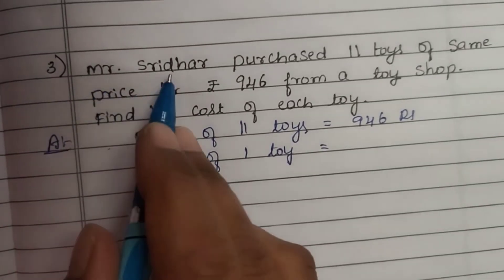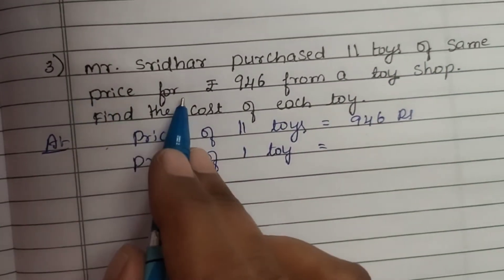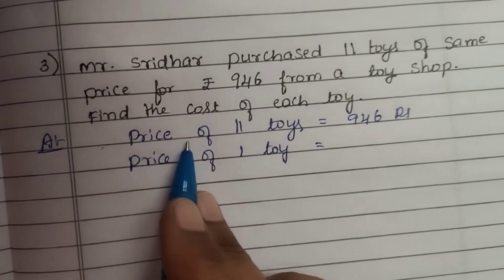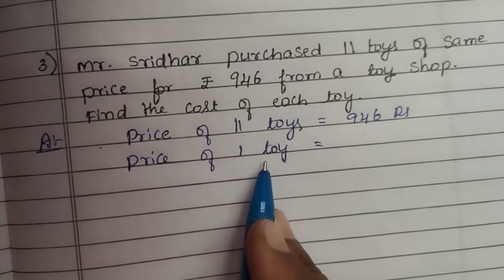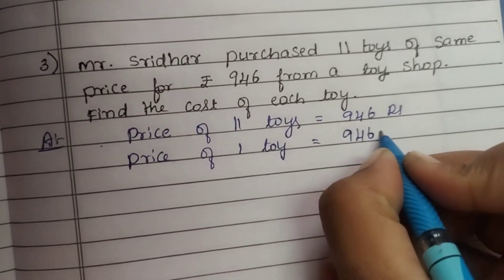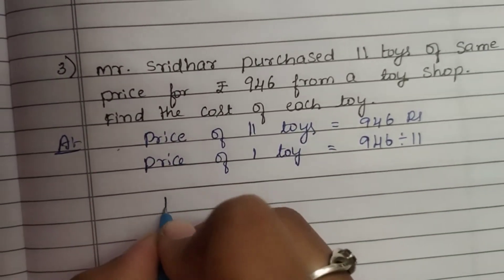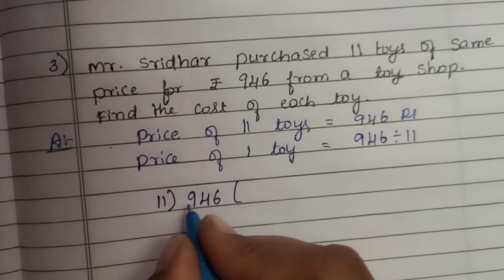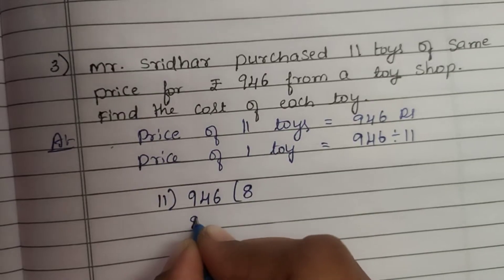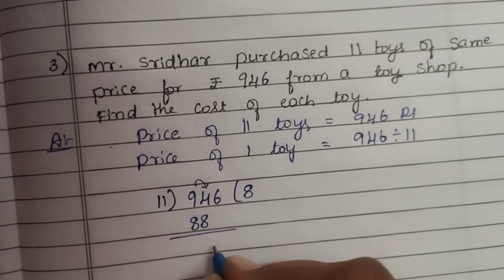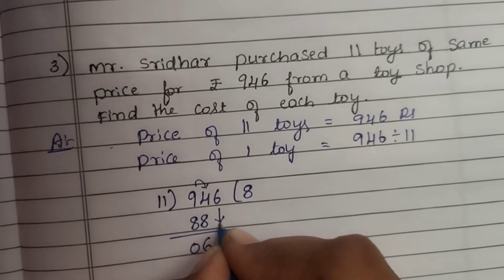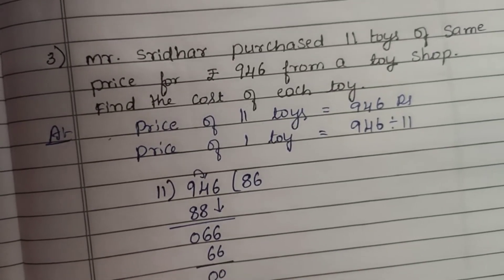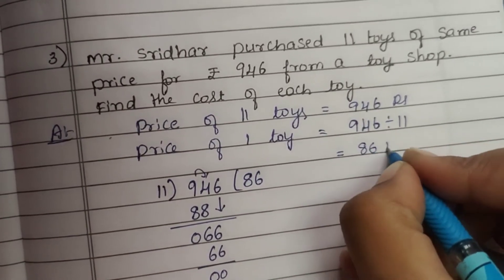Third question: Mr. Shridhar purchased 11 toys of the same price for rupees 946 from a toy shop. Find the cost of each toy. Price of 11 toys = 946. Divide 946 by 11: 11 eights are 88, bring down, 11 eights are 88, 14 minus 8 is 6, 8 minus 8 is 0. Bring down 6: 11 sixes are 66, 66 minus 66 is 0. The cost of 1 toy is 86 rupees.